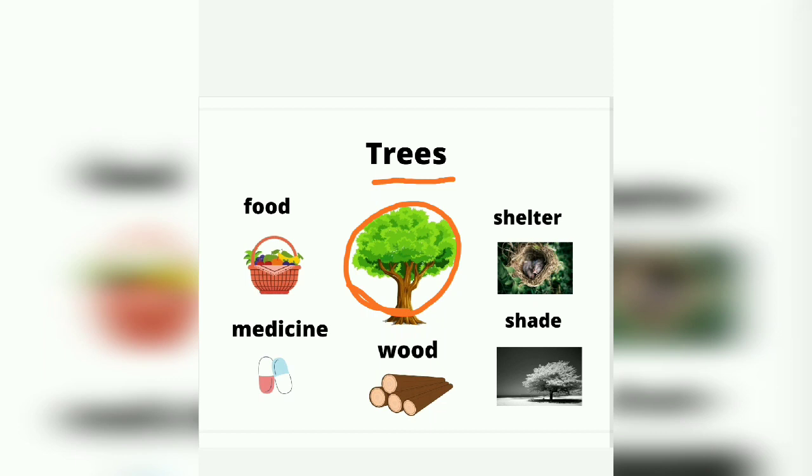Trees give us shade. When we are walking and tired, or it's very hot, we rest under trees in the shade. Trees give us food, many fruits. Vegetables also come from trees. Medicine also comes from trees. Many medicines come from trees.